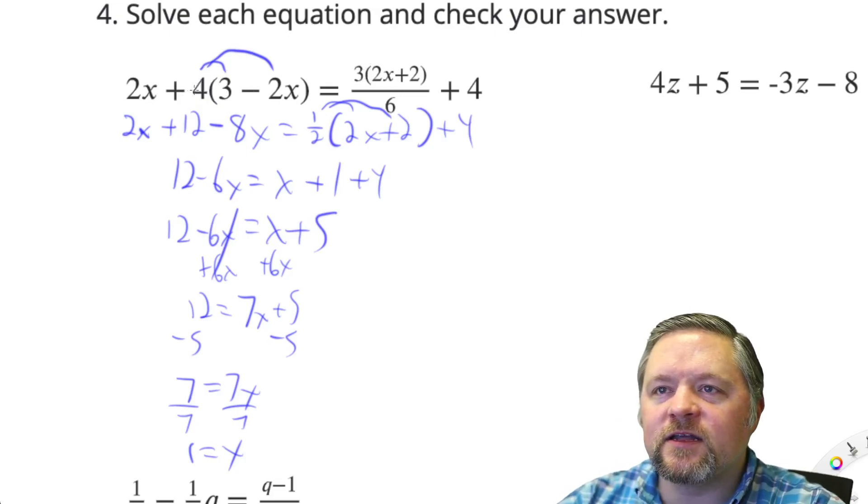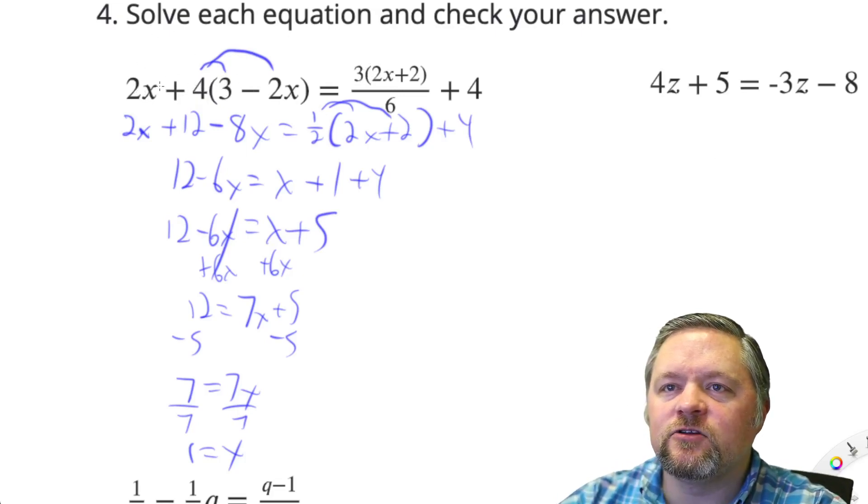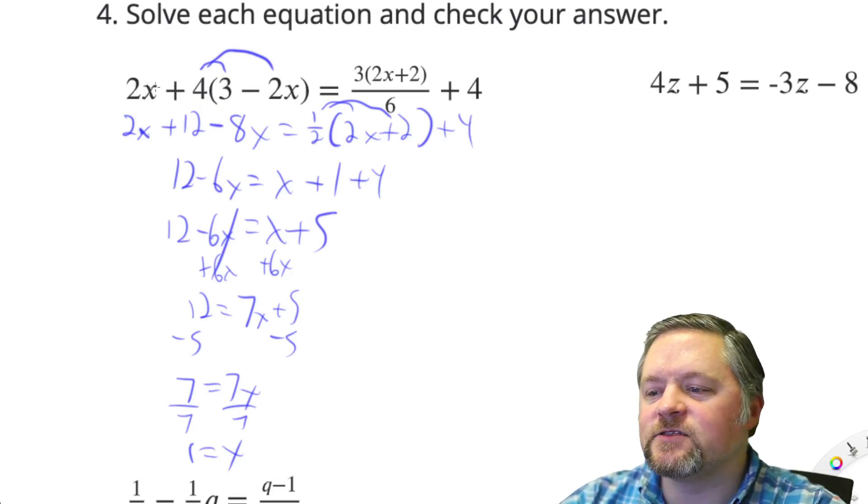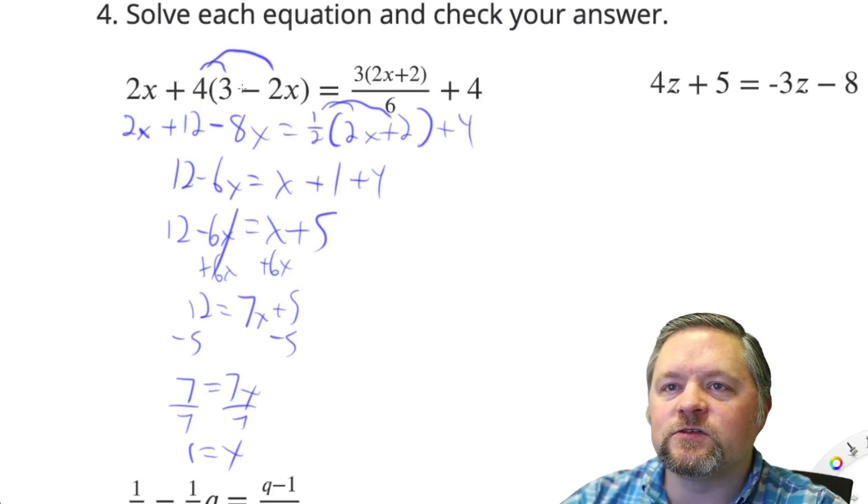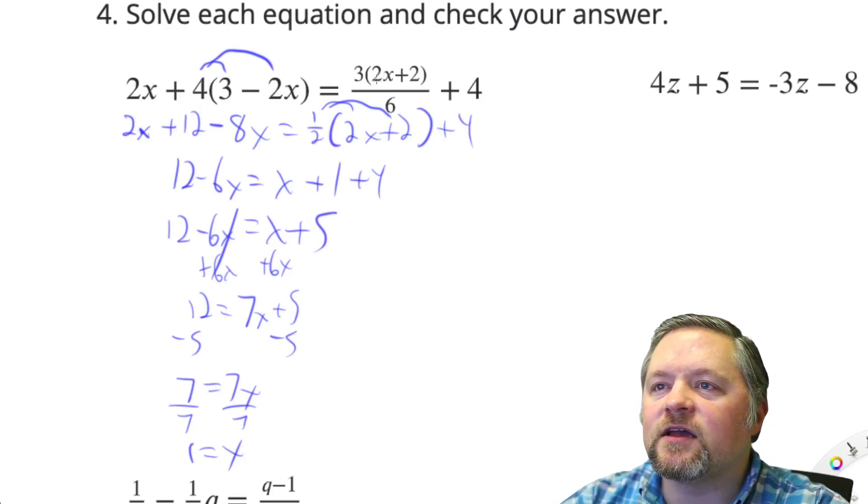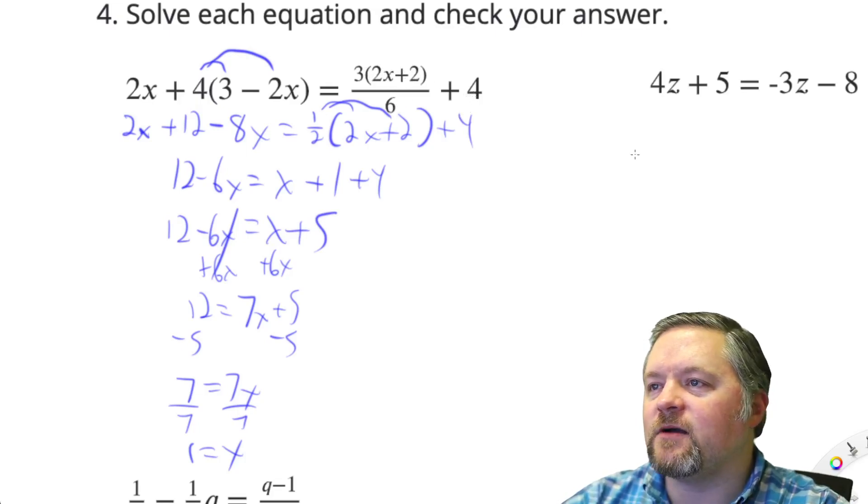Now, plug it in to check. 2 times, if x is 1, 1. 3 minus 2 times 1. 3 minus 2 is 1. 4 times 1 is 4. So that's 2 plus 4, which is 6. On this side, 2 times 1 is 2. 2 plus 2 is 4. 3 times 4 is 12, divided by 6 is 2, plus 4 is 6. That works.